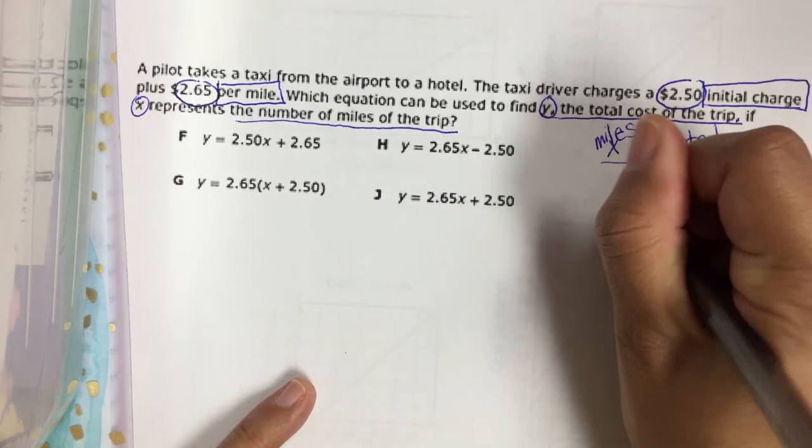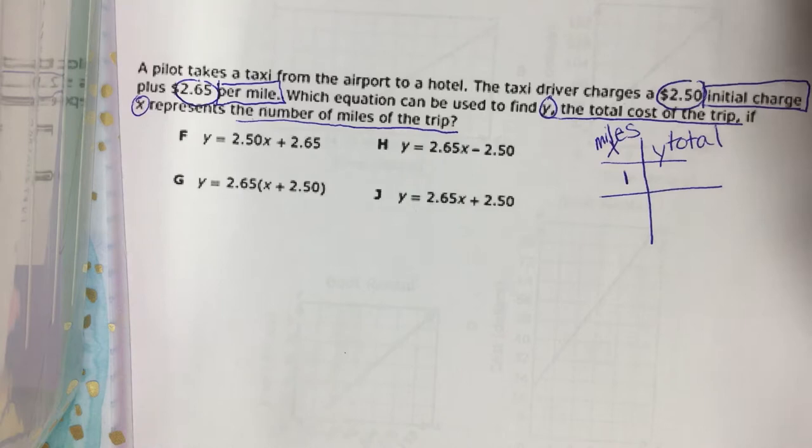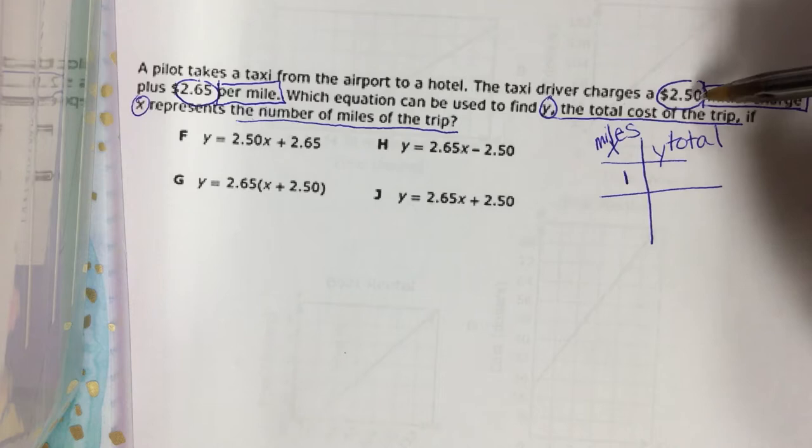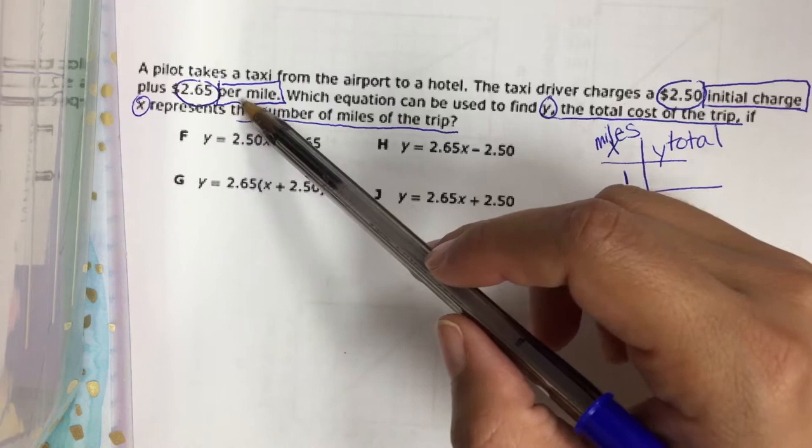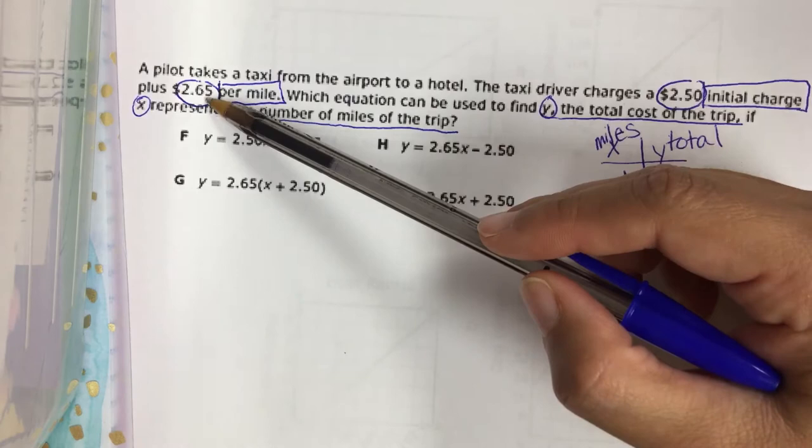Let's look at this for a second and I'm just gonna travel one mile for my example here. It says that the taxi driver charges a $2.50 initial charge. So just for me getting into his car I have to pay $2.50 plus $2.65 per mile. So for every mile after that that I drive I have to pay $2.65.